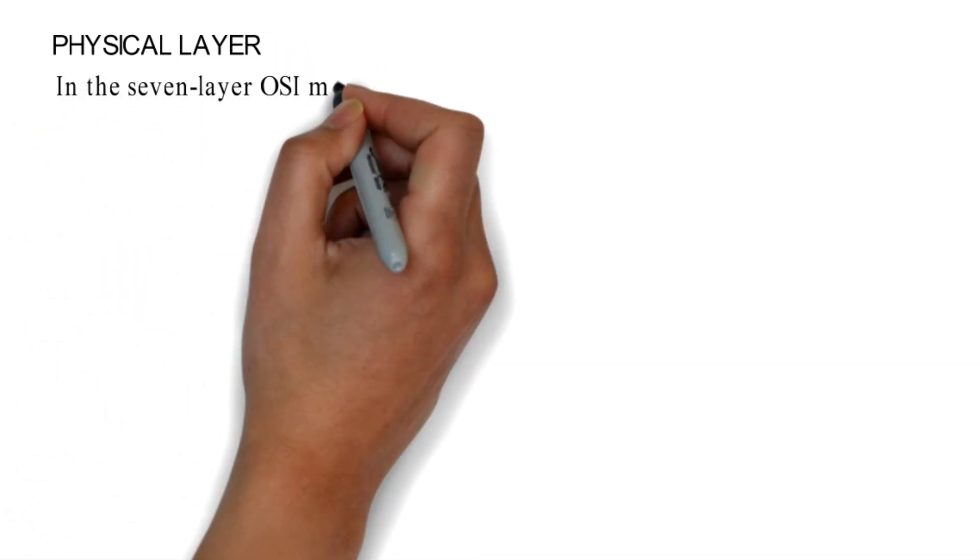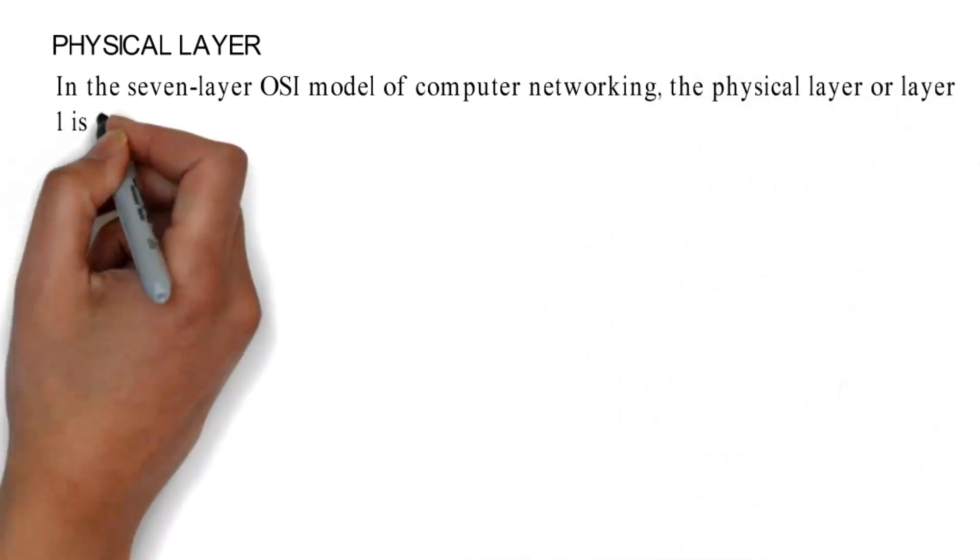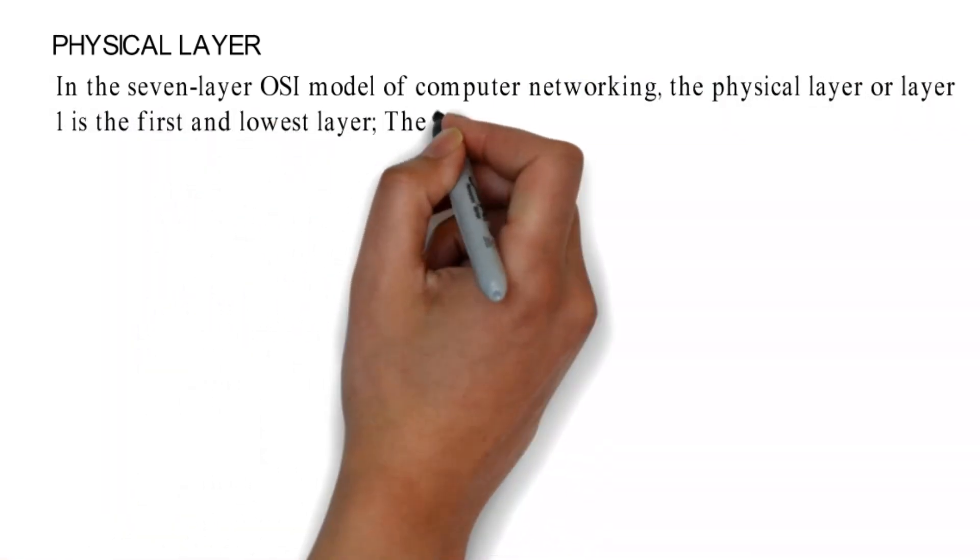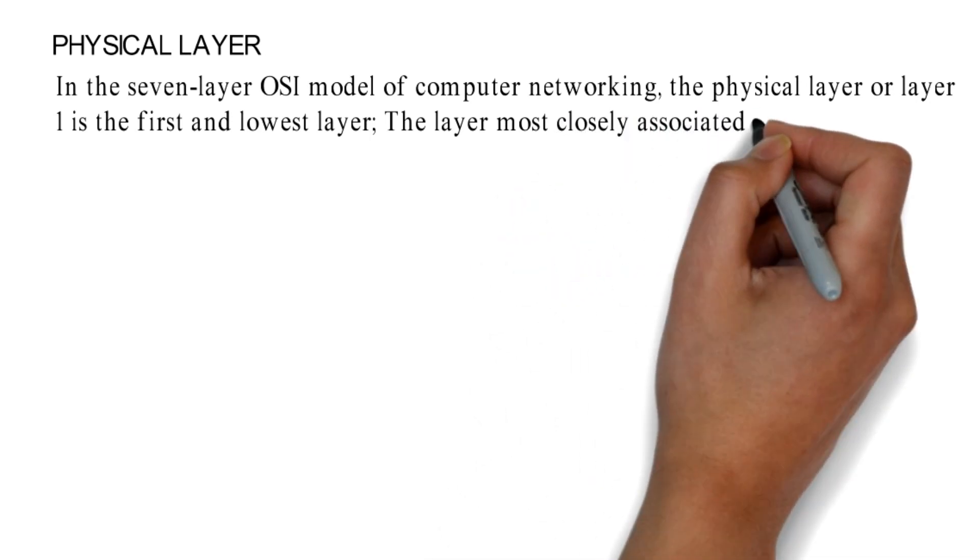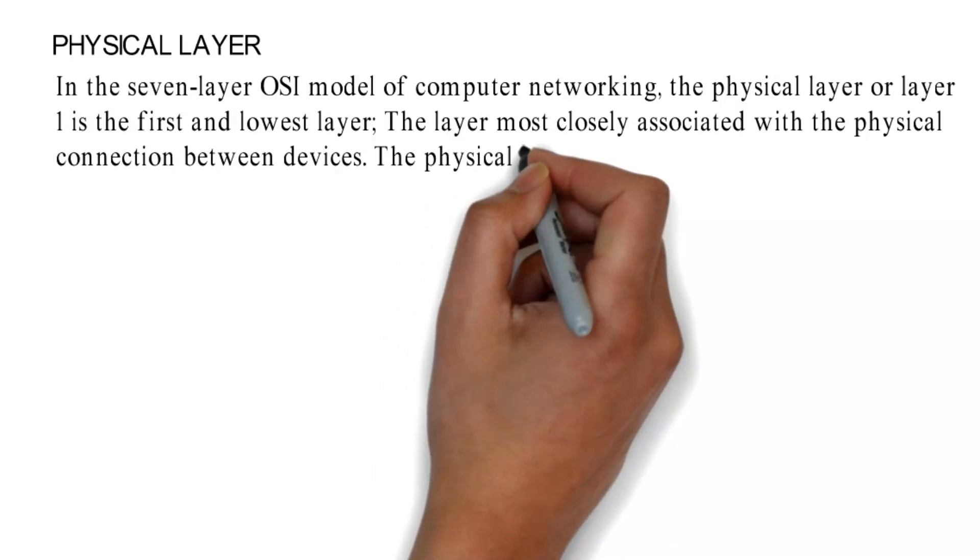Physical Layer. In the seven-layer OSI model of computer networking, the physical layer or layer 1 is the first and lowest layer, the layer most closely associated with the physical connection between devices.